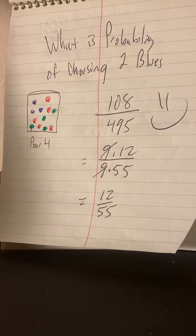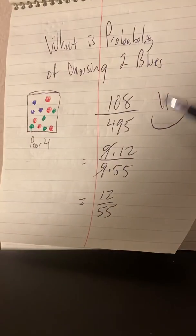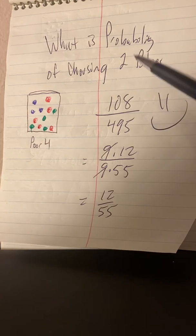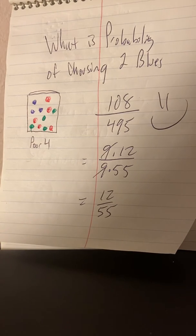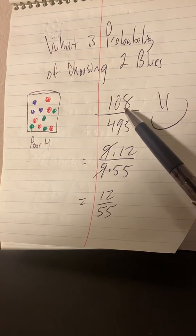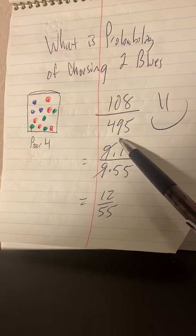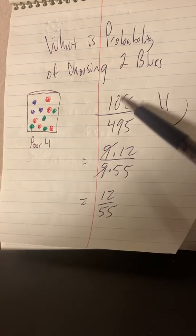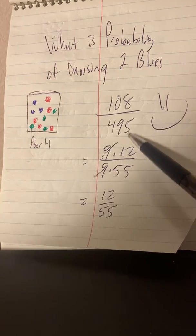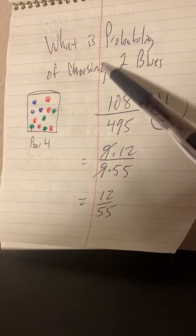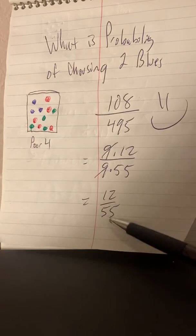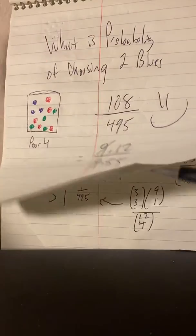So what is the probability of choosing two blues? Well, we said there's 495 things that could possibly happen, and there's 108 ways to get two blues. So the probability is 108 out of 495. And obviously this divides by nine, so does this, so we can factor out the common nine and reduce. We'll stick with this so it makes it easy when we're adding our probabilities later. But if this was the question, I would prefer this answer, but I'll accept that.